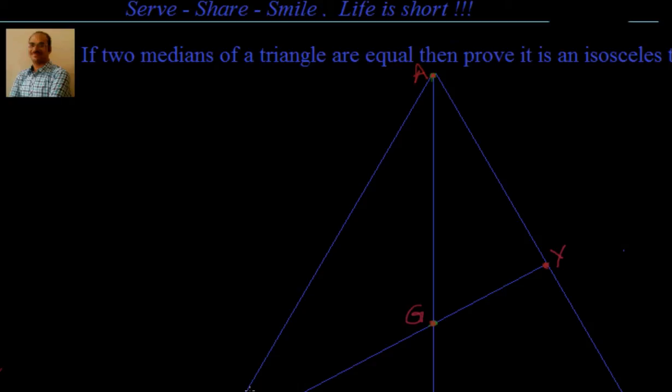Hello friends, welcome. In this session, let's look at one interesting example related to geometry and medians. We have been asked that if two medians of a triangle are equal, then prove it's an isosceles triangle.